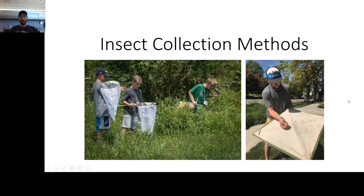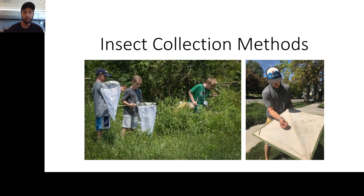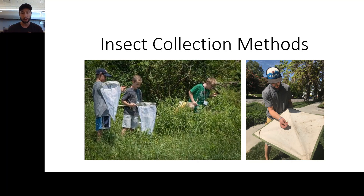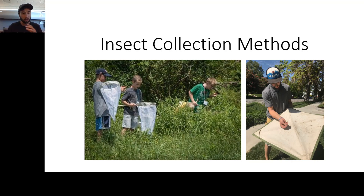Hey everybody, welcome back. In this video we're going to tackle this whole idea of actually going out and looking at insects yourself. It's really kind of an exciting step. We've gone through a few videos already, and you've learned about some of the many different types of Hemiptera that are out there and that can be seen. And so using that knowledge now, hopefully we can all go out this summer and look around our backyard, when we go camping, potentially at a national park someday soon, we can be looking around and cataloging what we're seeing. And we need to know how to collect that information effectively.